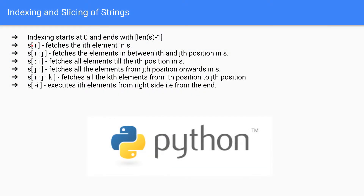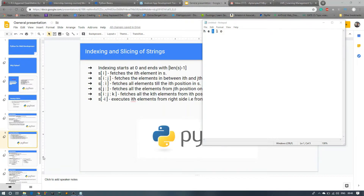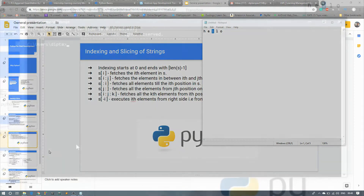Indexing and slicing of a string: S[i] fetches the i-th element in the string S. So if you put S[2] it will print L, because at position 2 the value is L — positions 0, 1, 2. Let's clear this concept by opening CMD and entering the Python shell.